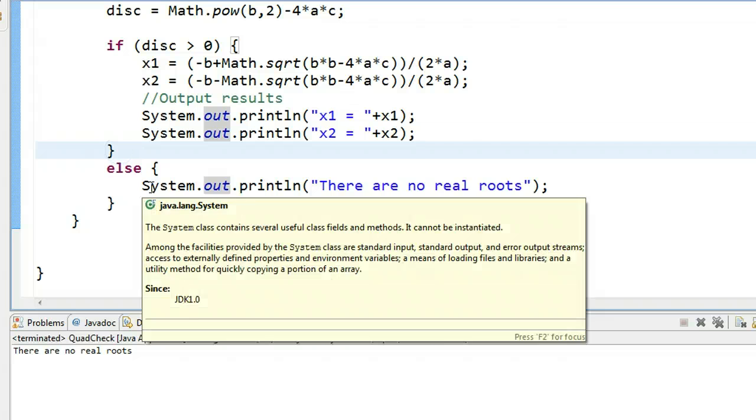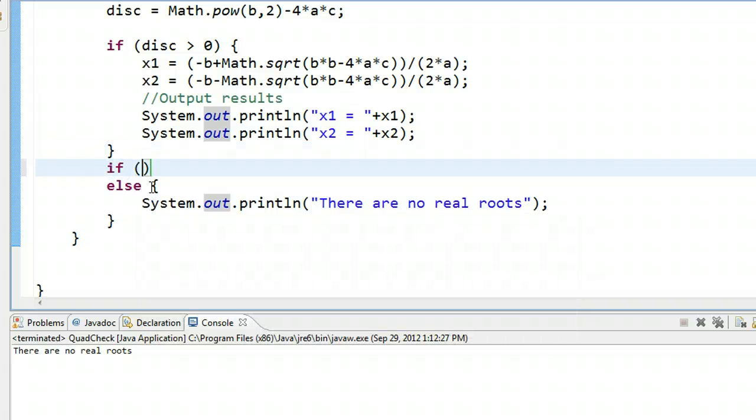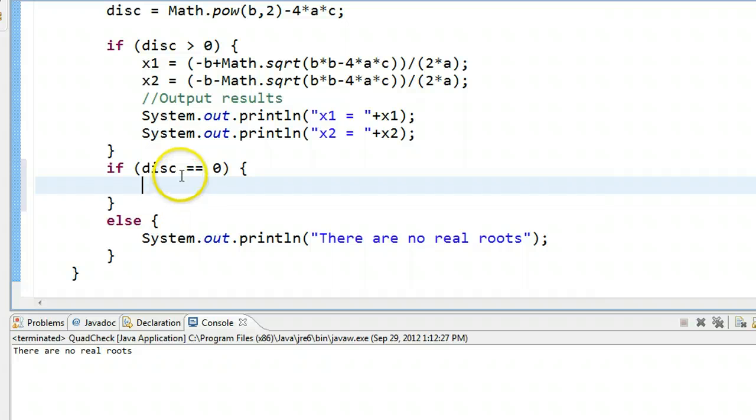So what we're going to do is we're going to add another if statement after it. We can have as many if statements as we want. We're going to say if the discriminant is equivalent to 0, and this is a very important vocabulary piece here. We always want to say two equal signs is equivalent because that communicates to us that we're checking if they're the same. If we say equals, it implies you're putting the value into that variable.